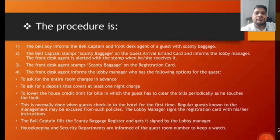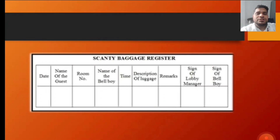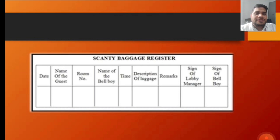The bell captain fills the scanty baggage register, which is signed by the lobby manager, and the housekeeping and security departments are informed of the guest's room number to keep a watch. The scanty baggage form includes: the date, name of the guest, room number, name of the bellboy, time, description of baggage, remarks, signature of the lobby manager, and signature of the bellboy.